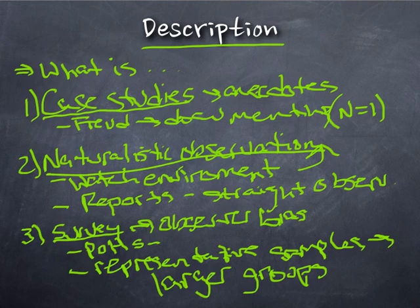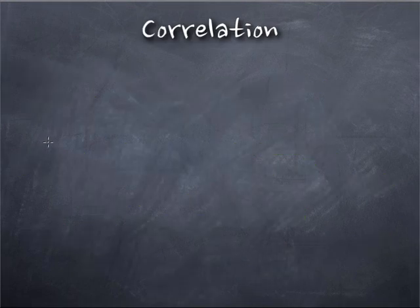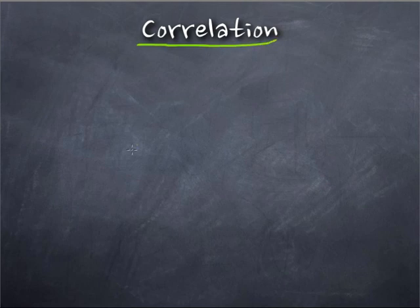Description is the first one. The second method we're going to highlight is correlation, and this is probably the most misunderstood method in experimentation or research.